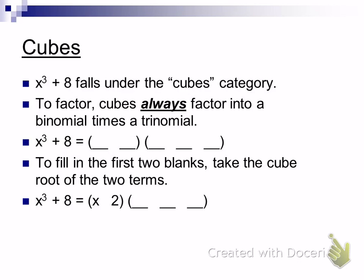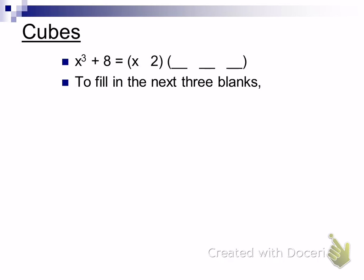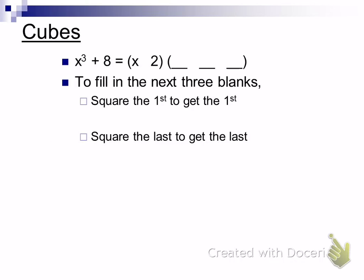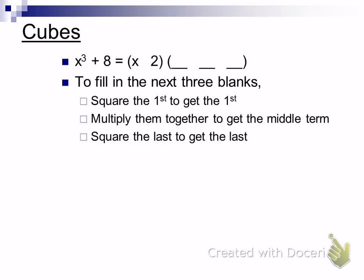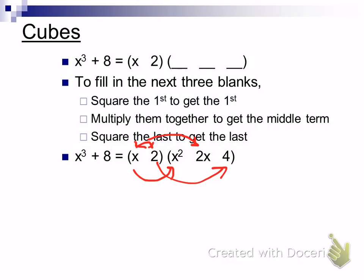To fill in the next three blanks, you square the first term: x squared is x squared. Then you multiply the two things together — x times 2 is 2x. And then you square the last term to get the last blank. So you square the first, multiply them together, then square the last. The binomial is the cube roots, and for the trinomial: square, multiply, square.